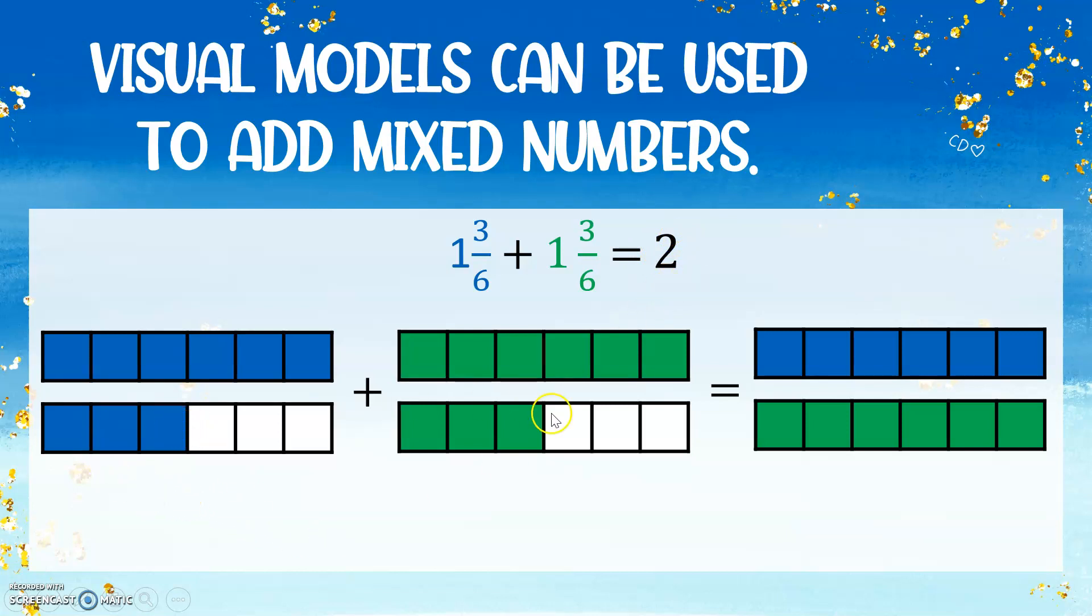So we have 3 sixths plus 3 sixths. So 3 sixths, 4 sixths, 5 sixths, 6 sixths. So now I'm going to have 6 sixths because 3 sixths plus 3 sixths equals 6 sixths. Now we can say that this is 2 and 6 sixths, or since 6 sixths is also equal to 1 whole, we could say it's equal to 3.